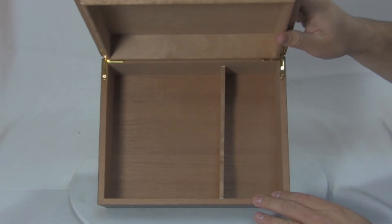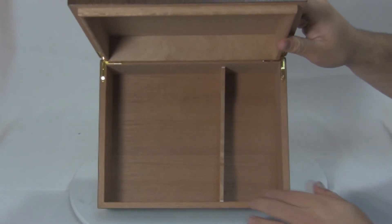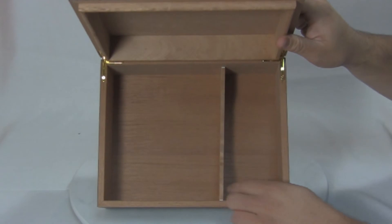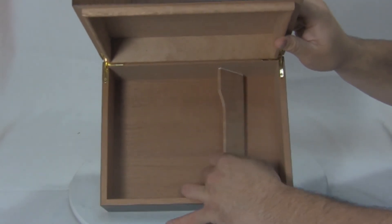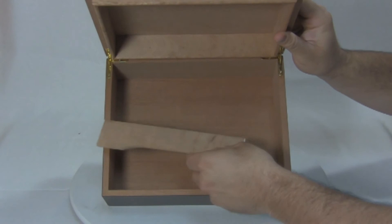The entire inside is lined with kiln dried Spanish cedar and it comes with one removable and adjustable divider. You can take this out and place it wherever you like within the box.